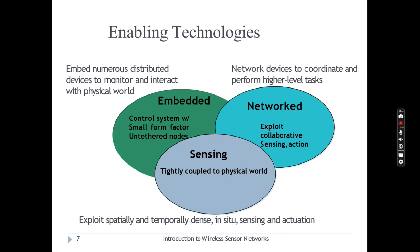What are the enabling technologies that make wireless sensor networks interesting? Three technologies are widely used: embedded, network communication, and sensing. Embedded refers to the microcontroller and related operating system — it embeds numerous distributed devices to monitor and interact with the physical world. Network is very important — it provides communication for all sensor nodes to collaboratively work; network devices coordinate and perform higher-level tasks. Sensing devices are used to collect information from the external world.